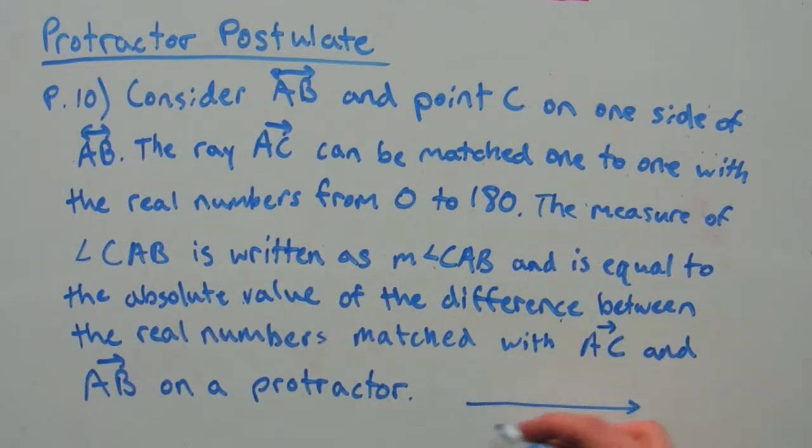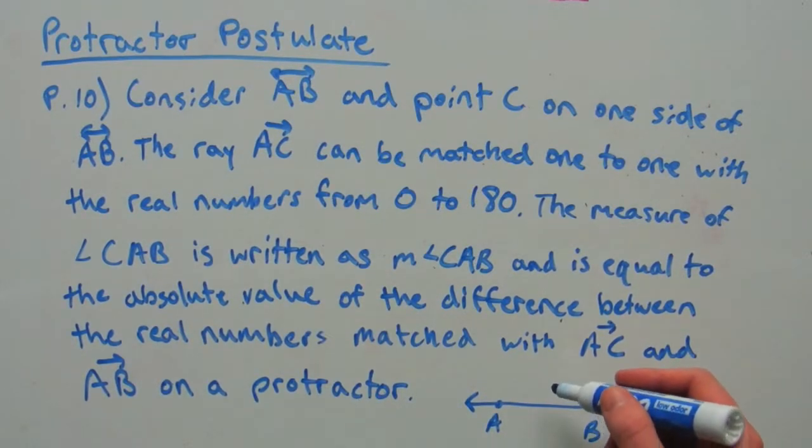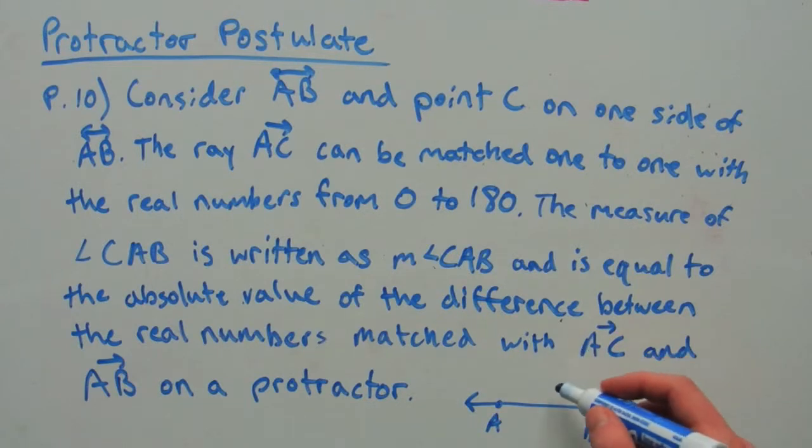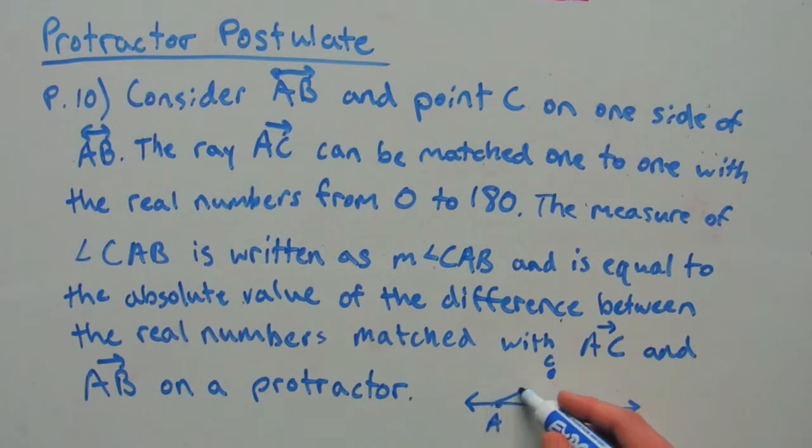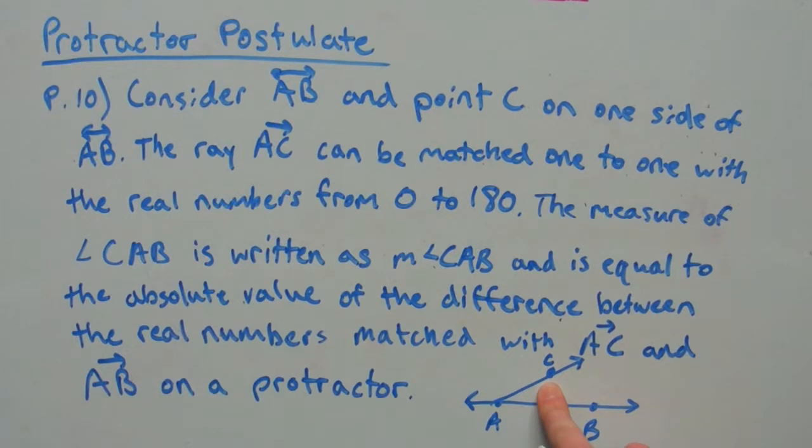Let's say we're taking some line AB and we're putting a point C either on this side or this side. So, let's put it right here. If we create that ray AC, this ray can be matched one to one with the real numbers from zero to 180 degrees.